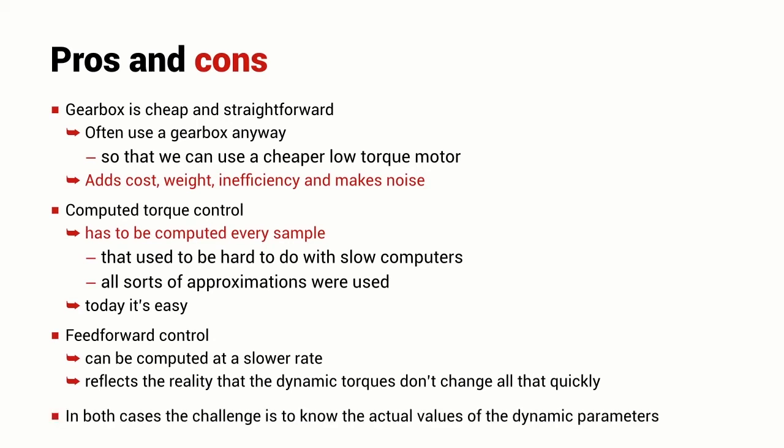For the computer torque control and for the feed forward control, there is a significant challenge in knowing the actual values of the dynamic parameters of each of the links. For each link, there are ten dynamic parameters, as we discussed earlier. So, for a six-link industrial robot, that's sixty dynamic parameters need to be identified. You can do it experimentally or you can perhaps do it from a CAD model of the robot.